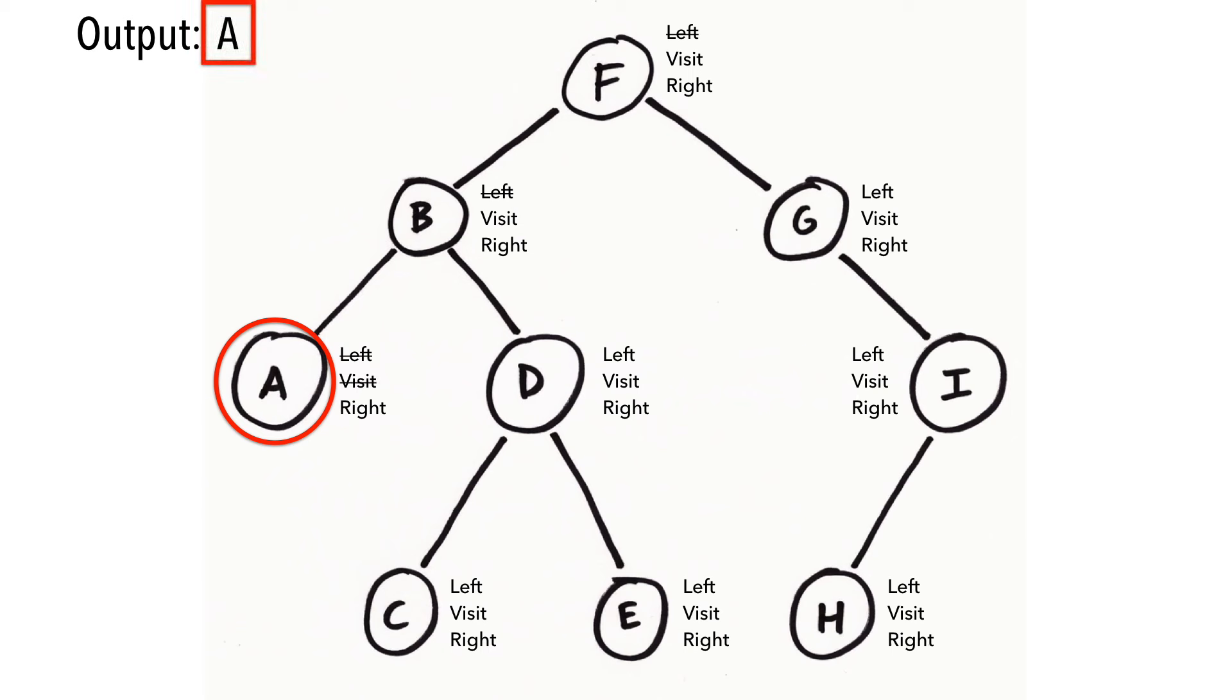Next, we try to travel A's right subtree, which is also empty, so we move back to B. We're finished with B's left subtree, so we're free to print its value and traverse the right subtree.